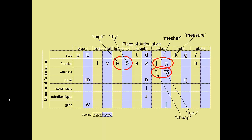The palatal affricates may be thought of as combinations of a stop and a fricative. The voiceless version is the sound that begins the word 'cheap.' The corresponding voiced version is the sound that starts the word 'jeep.'